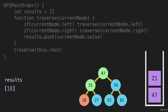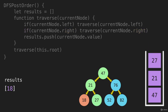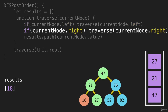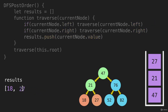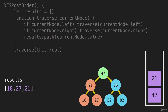So then 21 is the top of the call stack. It has already gone left, so now it's going to go right to the 27, which adds that to the call stack. The 27 is going to look to the left and to the right — there are no nodes there — so it's going to push its value into the array, and we can pop that from the stack. The 21 is at the top of the stack again. It's already gone left and right, and now it can push its value into the array, and we pop that from the stack.